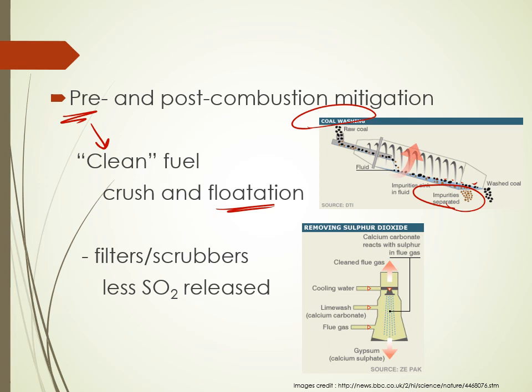We float the coal out of the water, which leaves all the impurities behind — the nitrogen, sulfur, and other junk is washed away from the coal. Now I've got clean coal that's only going to make CO2 when I burn it. We also have post-combustion mitigation: we can put filters and scrubbers in our smokestacks, and that's going to capture some of those sulfur oxides and nitrogen oxides produced when we burn fossil fuels.